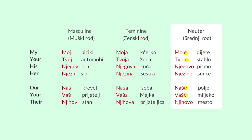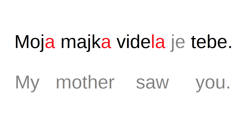Neuter gender endings: Мое, Твое, Наше, Ваше. So when you talk about me or you, you're adding an E. And when we talk about the third person — like him, her, or them — it's getting an O: Негово, Незино, Нихово. With this you can say: Моя майка видела е тебе — my mother saw you.